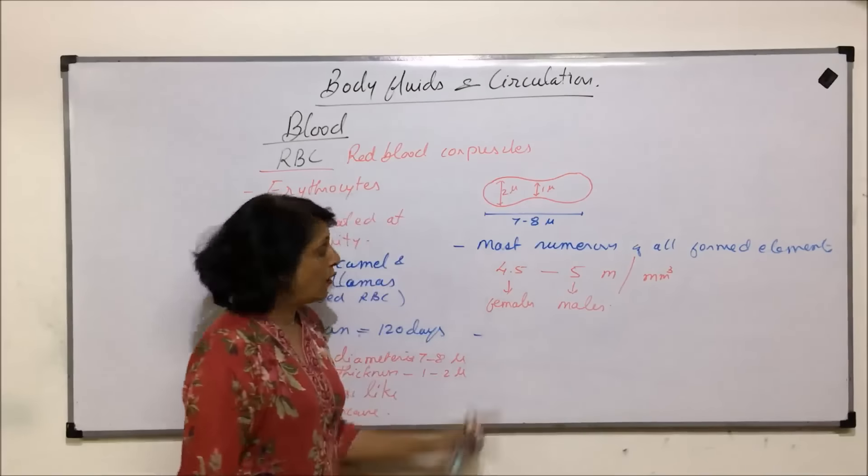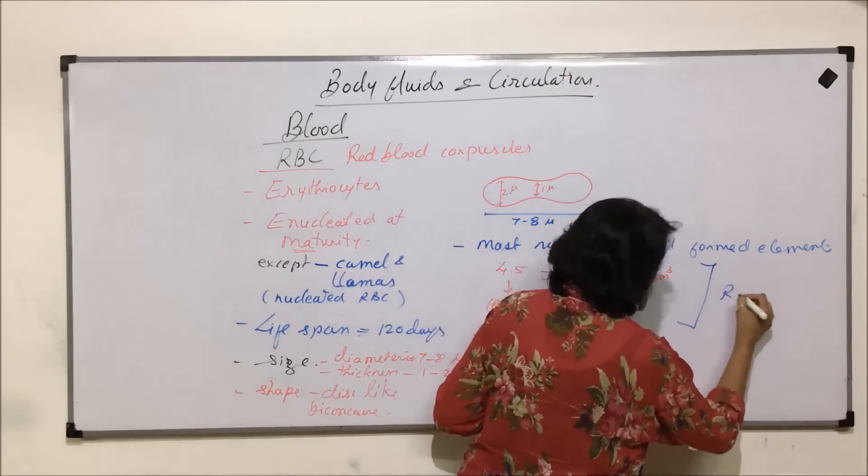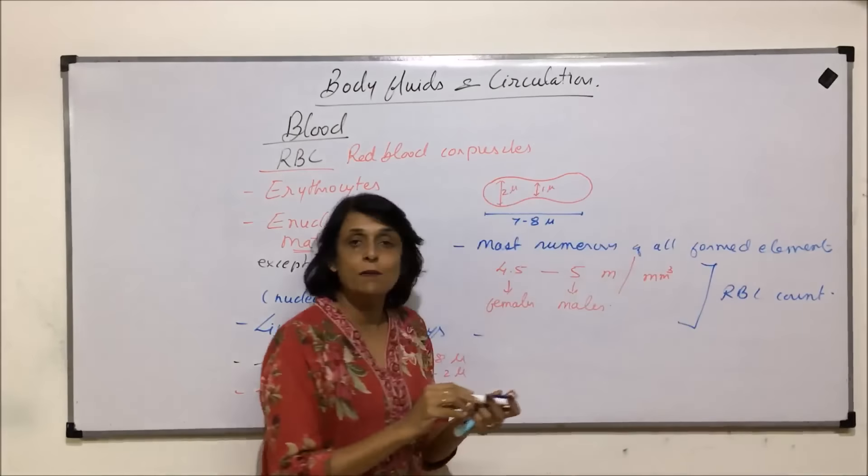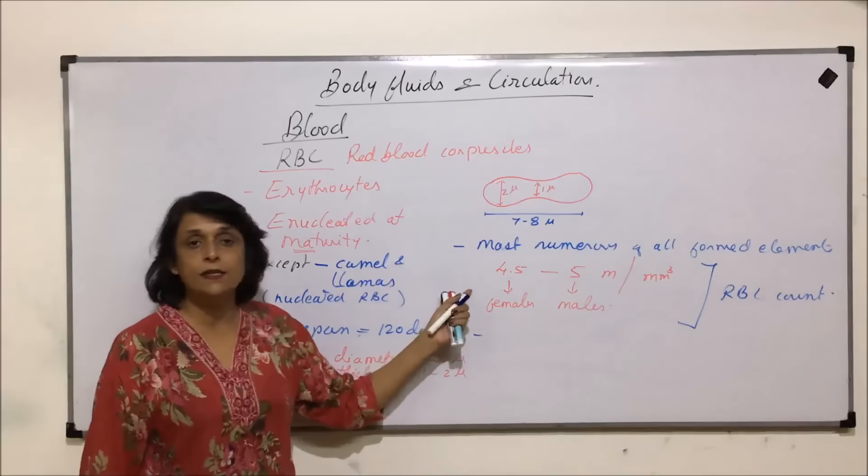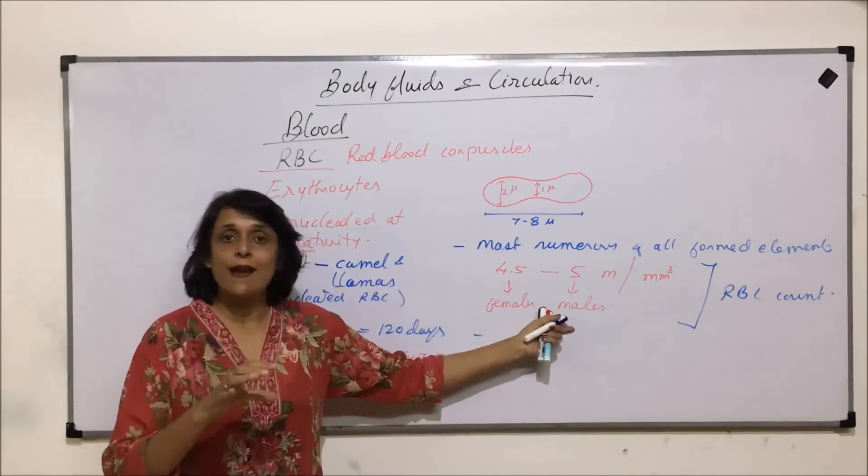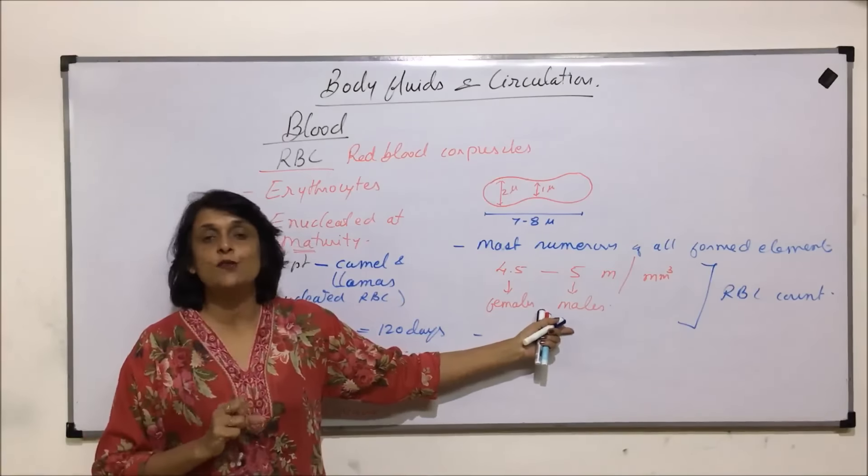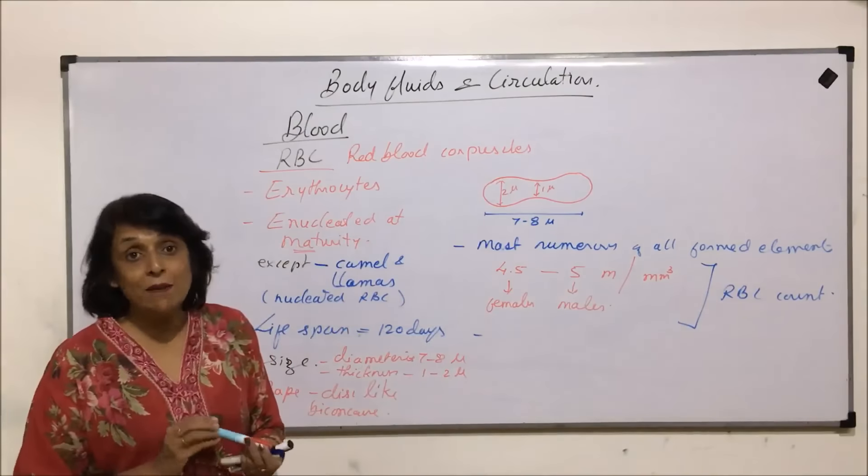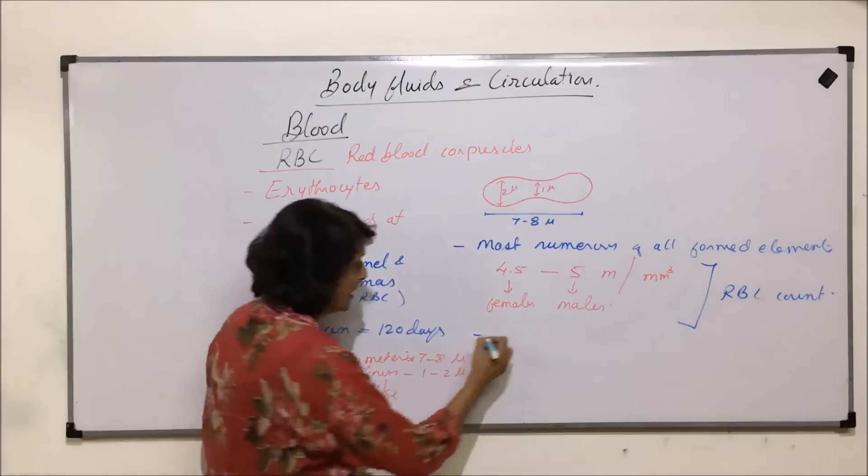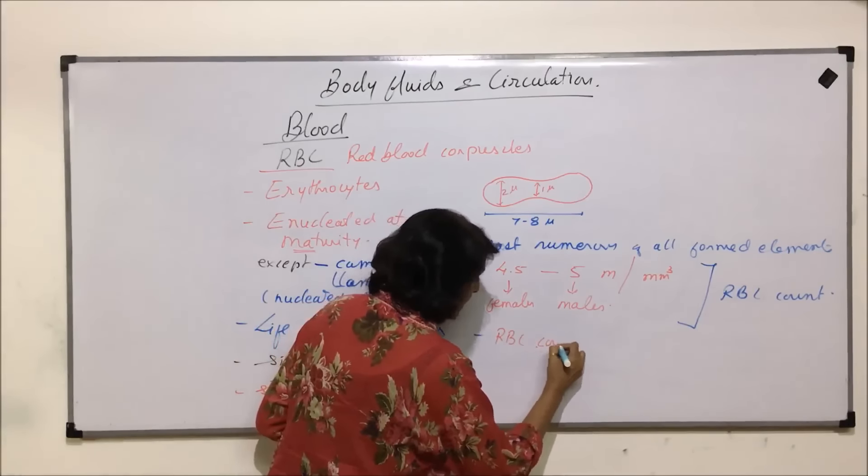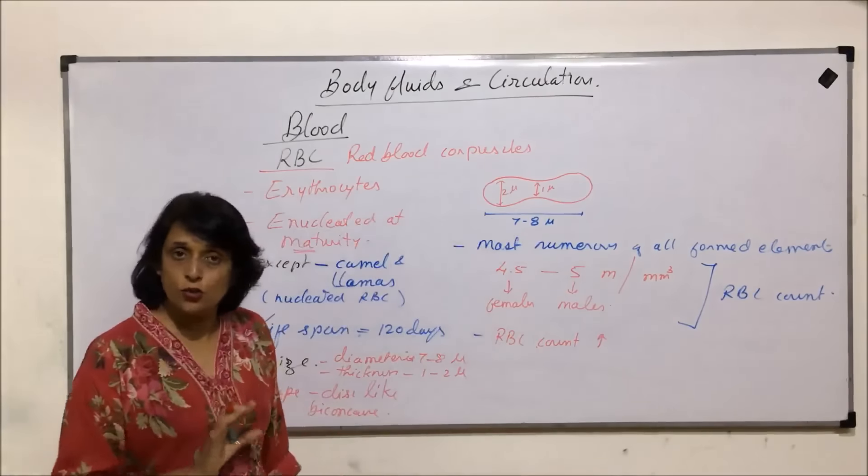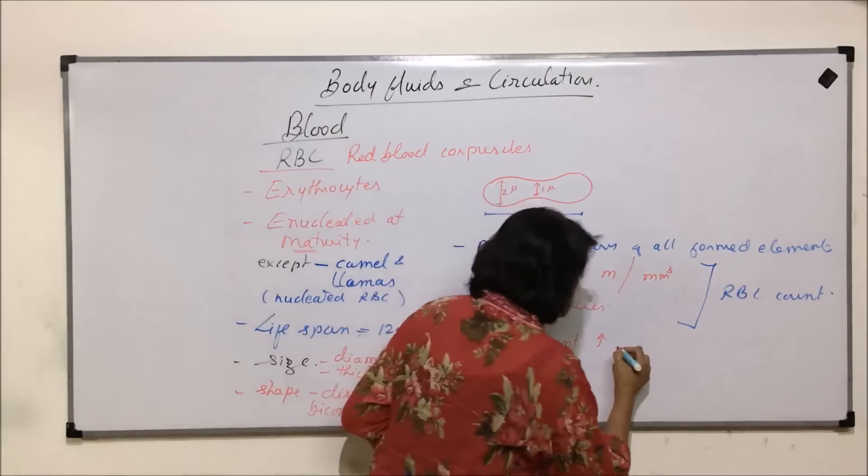This number is known as RBC count. The normal number that we take is this, and counting RBC or the number of RBCs which are present is called RBC count. This number increases. RBC count increases in two conditions normally.